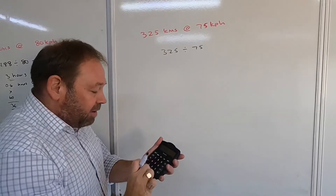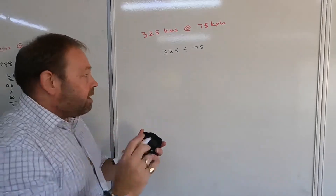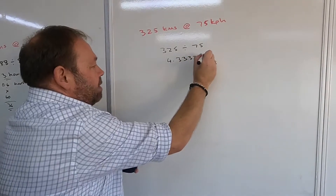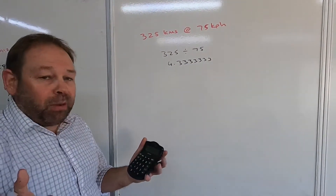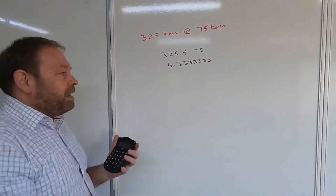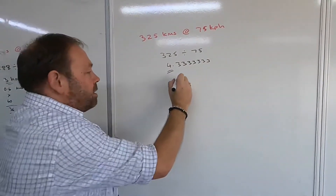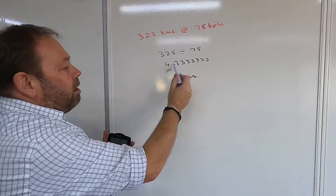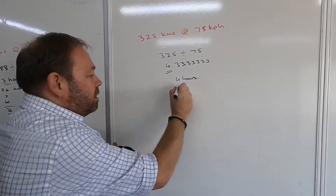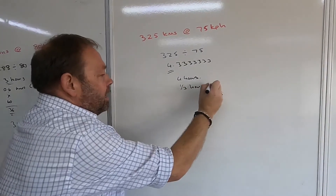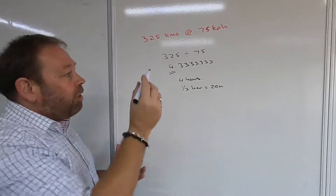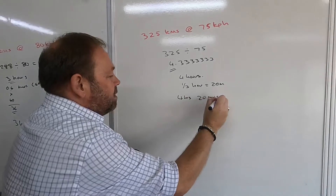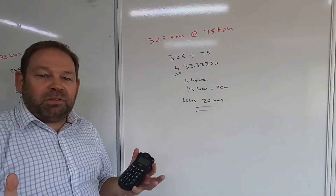We take 325 kilometers and divide it by our average speed of 75. On the calculator, 325 divided by 75 gives us an irregular answer: 4.3333 recurring. We have 4 complete hours. If you think back to your maths, 0.3 recurring is a third, and a third of an hour is 20 minutes. So our driving time for this would be 4 hours and 20 minutes.